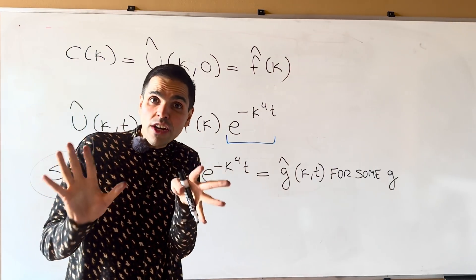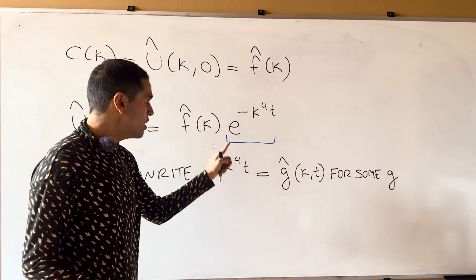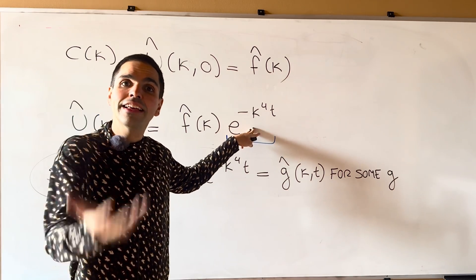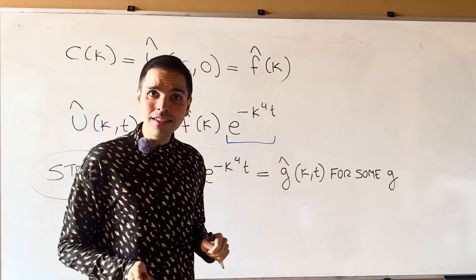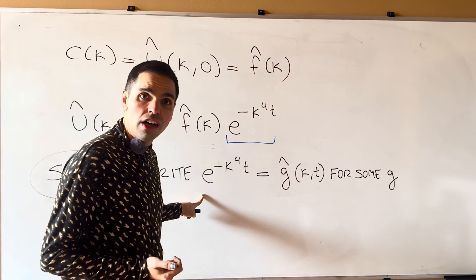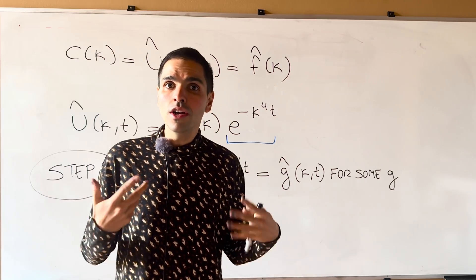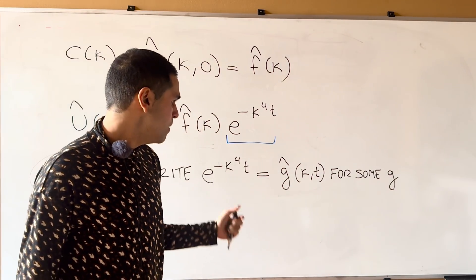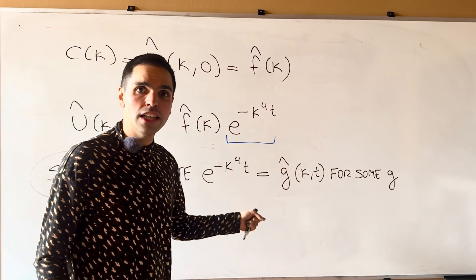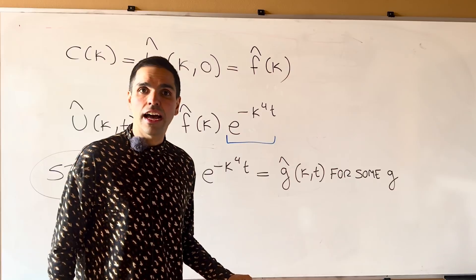Now here is where things get a little bit different, because for the heat equation we had the Gaussian where we could find G explicitly, but careful, this is not Gaussian. So instead, what we have to do is to use the inverse Fourier transform. Because remember, the inverse Fourier transform tells us precisely how to write any function as a hat.